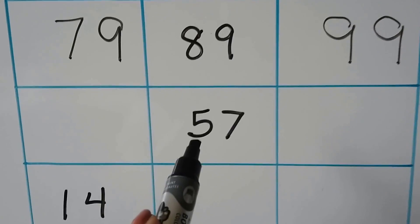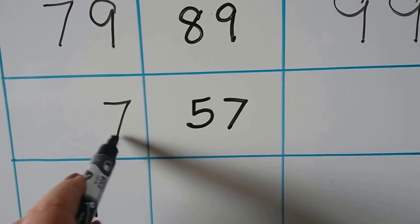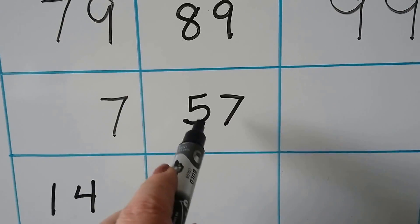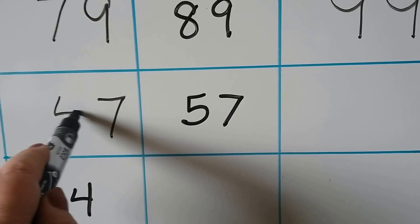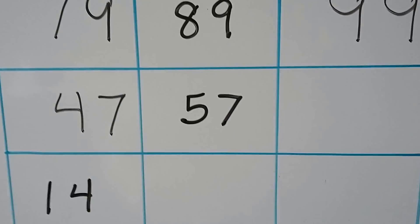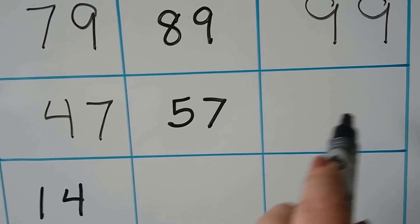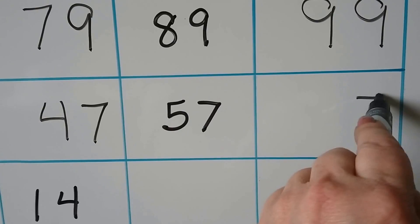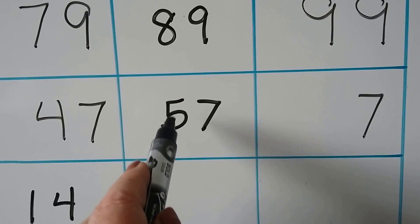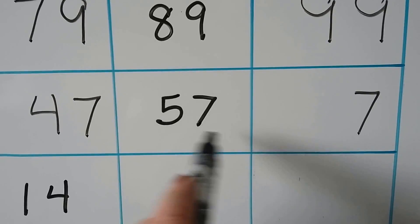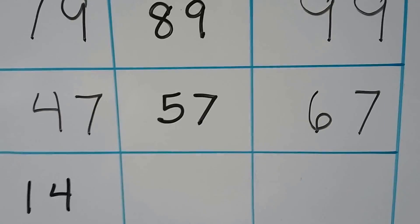10 less than 57: the ones are going to stay the same, we take away 1 ten from the 5, so we have a 4 — that's 47. 10 more: the ones are going to stay the same, we add 1 to the tens place — instead of 5 we'll have 6, so 67.